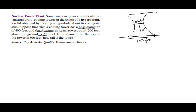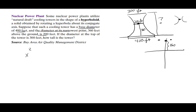The hyperbola opens side to side, so x² comes first. The narrowest point is the center of the hyperbola. Placing it on a coordinate axis, the center is at (0, 360). The 200-foot diameter splits to 100 on each side, so the vertices are at (±100, 360). This gives a = 100.